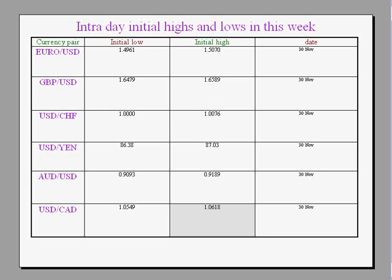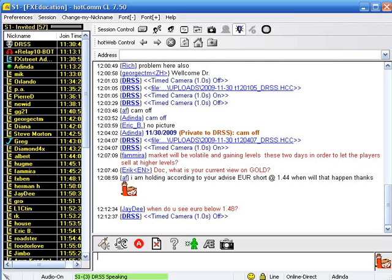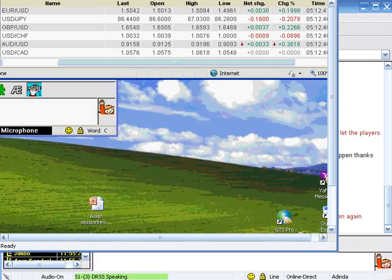The focused algorithm is: Japanese session volatile moves, then a slide; slide during early European session — at that time you can take a buy position and quickly take profit; then rise during the late European session and book profit; then during the US session when they make a drop you can buy, or when they rise you can take a sell, then quickly book profit during the drop and again take a buy and try to close during the quick run. View the volatility as a trading opportunity rather than becoming afraid of market conditions.